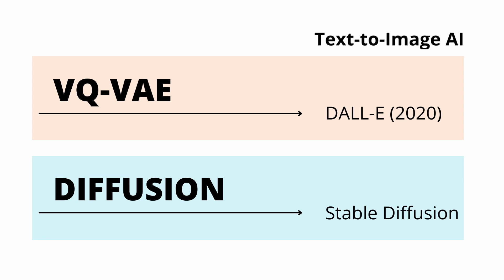DALL-E was the main text-to-image AI tool in 2020. Today, here almost at the end of 2022, we use diffusion as the mechanism. But it is very important that you understand the generation before this — and that generation was the vector quantized variational autoencoder.